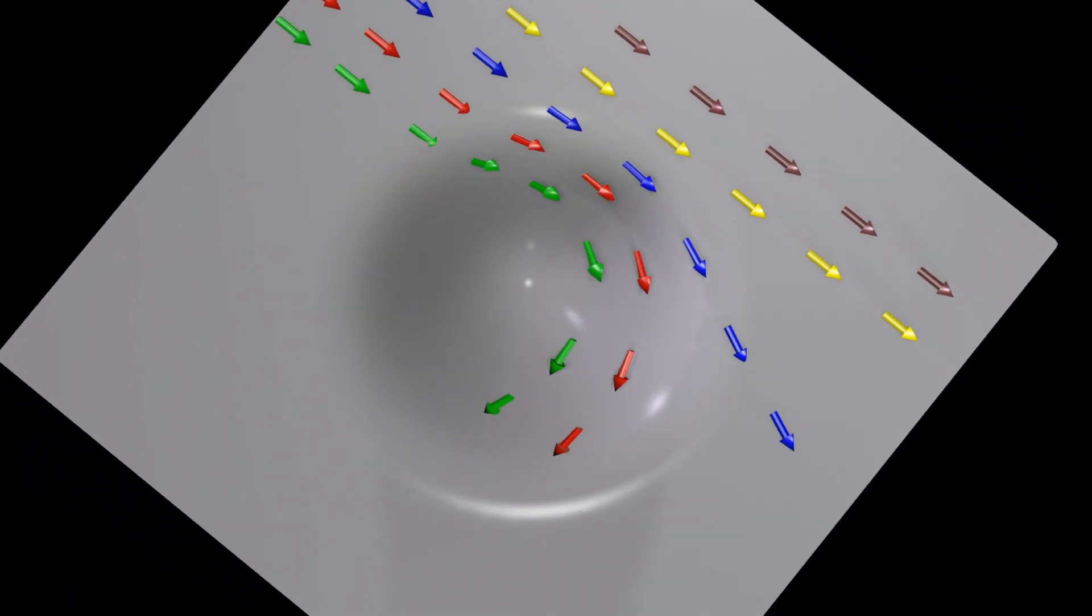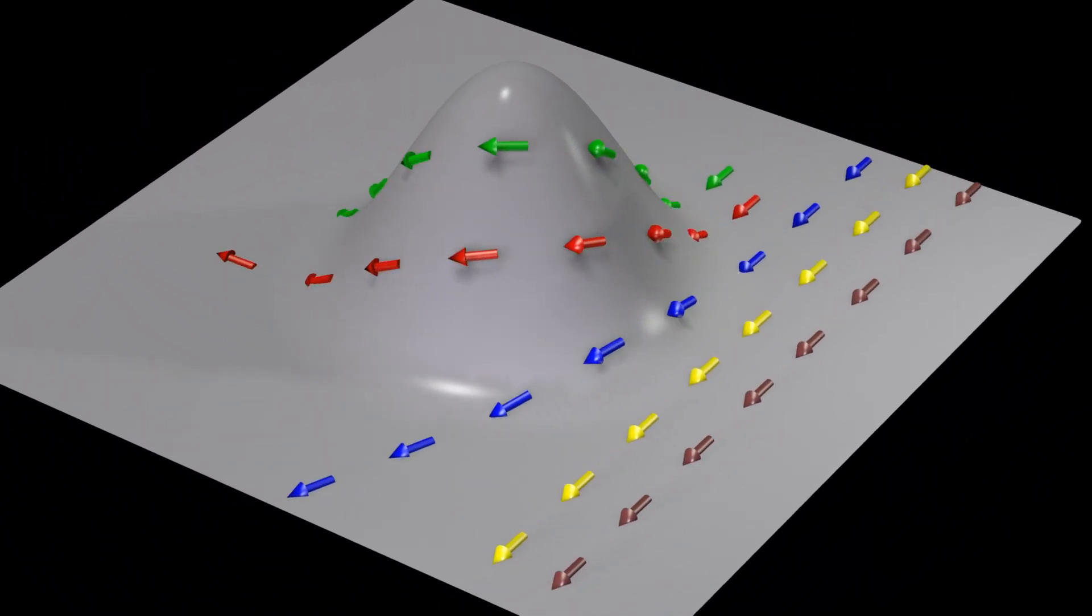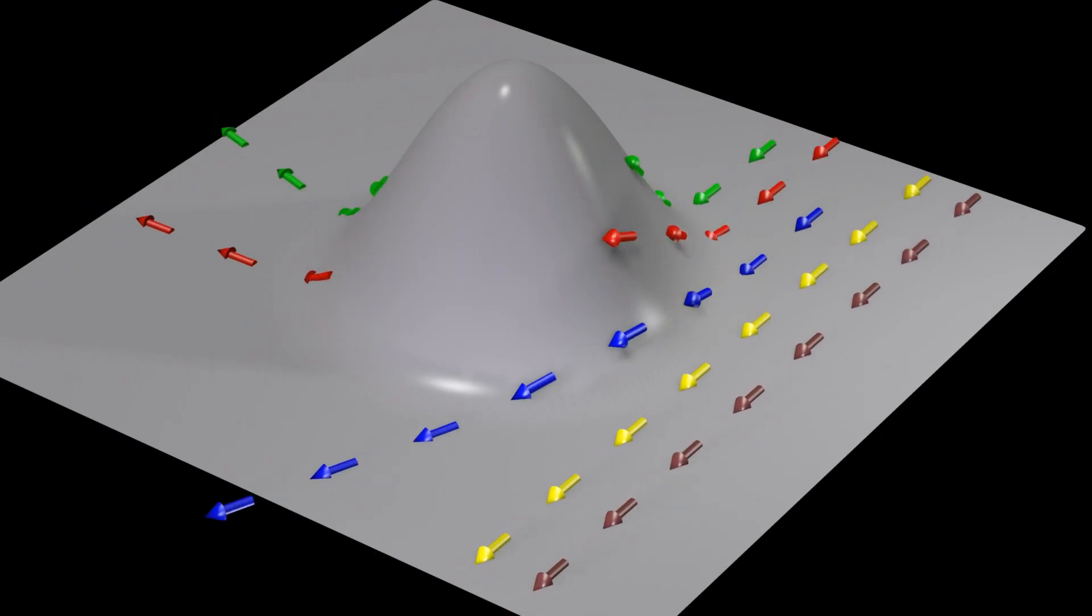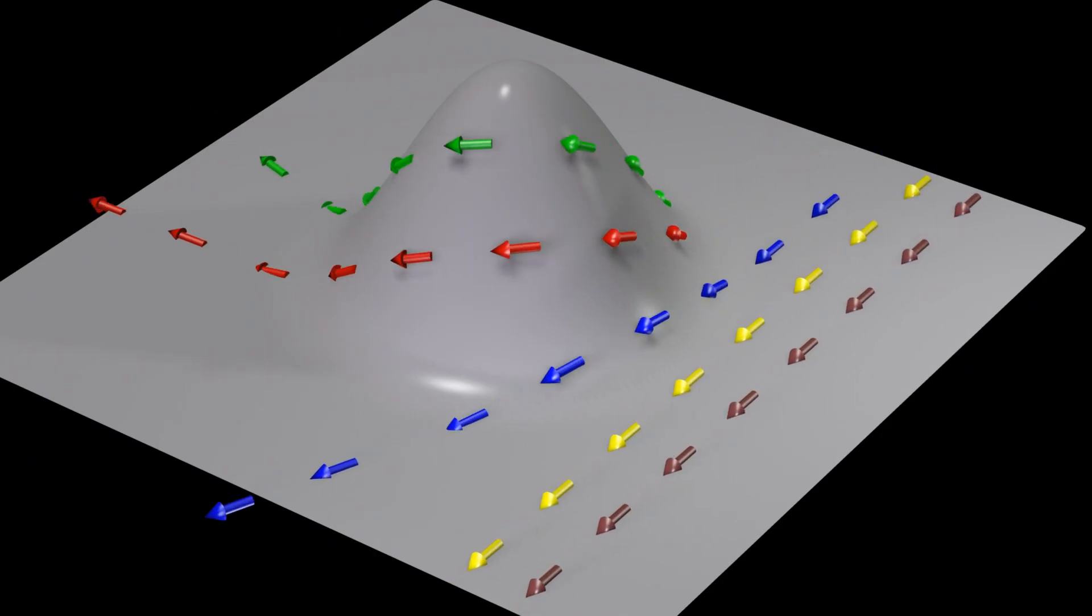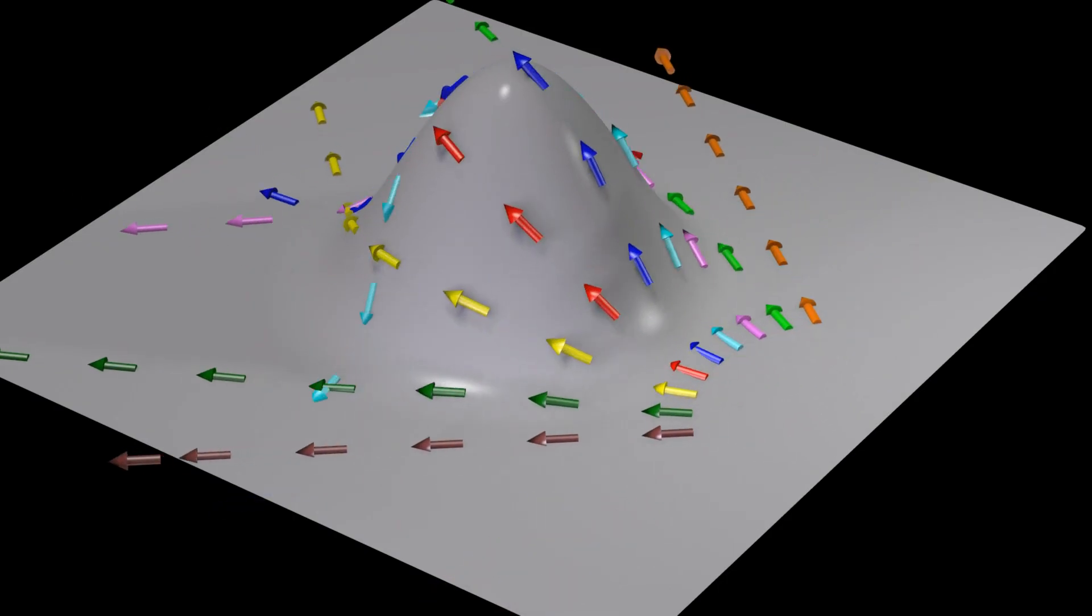Suppose that we are two-dimensional beings living on this surface. Suppose that we want to move forward in straight lines. The equivalent of a straight line on a curved surface is a geodesic.